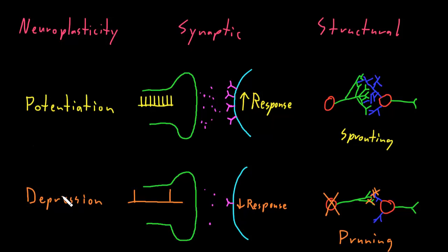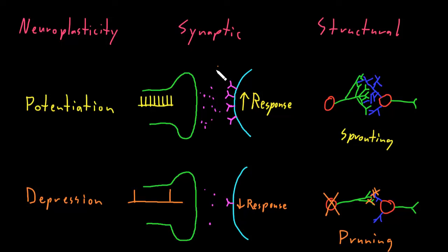Both potentiation and depression can happen over a wide spectrum of time. We often divide it into short-term changes, such as on the order of seconds or minutes, or long-term changes that can be months, years, or even decades. Synaptic neuroplasticity can contribute to both short-term and long-term potentiation or depression, and these structural changes tend to go along with more long-term potentiation or depression.